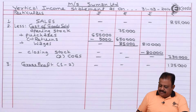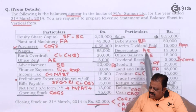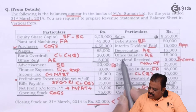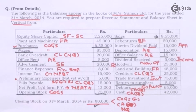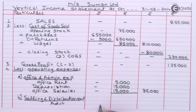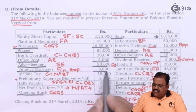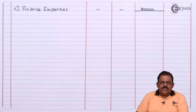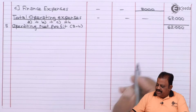From gross profit we deduct operating expenses. In operating expenses, first we have administration expenses: office rent 5,000, depreciation (administration) 15,000, office salaries 15,000 — total office and administration expenses 35,000. To this we add selling and distribution expenses: advertisement 20,000. Next we have finance expenses of rupees 8,000. Total operating expenses come to 63,000.